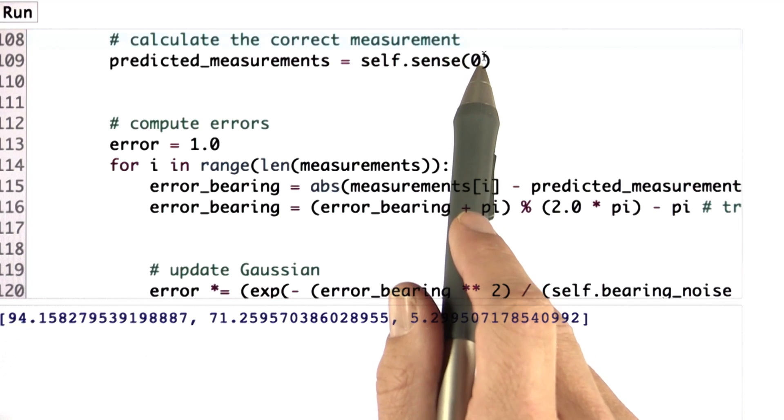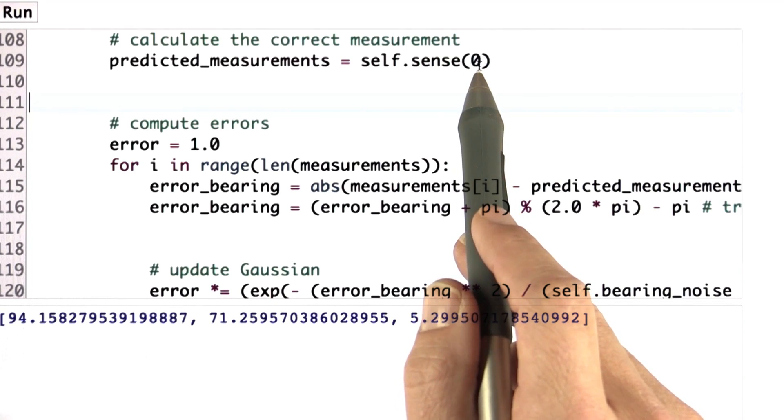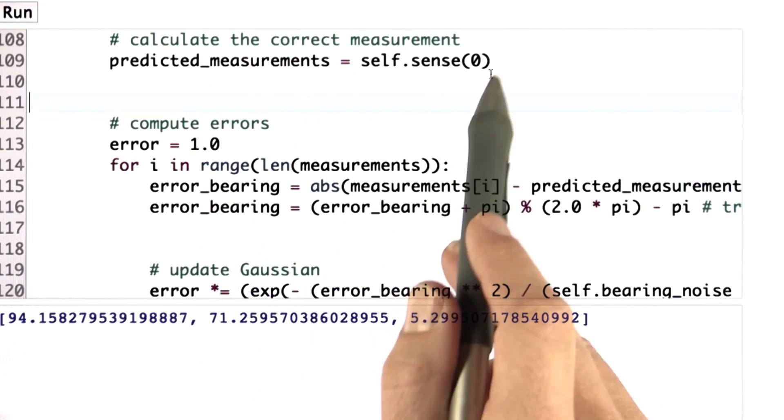But you don't need it for computing the probability of a measurement. So augment your sense function to have a flag that, if it's set to zero, switches off the noise model and gets you the predicted best possible measurements.